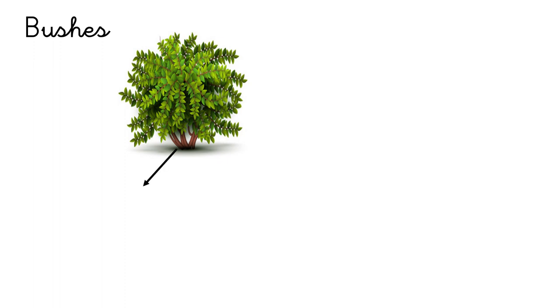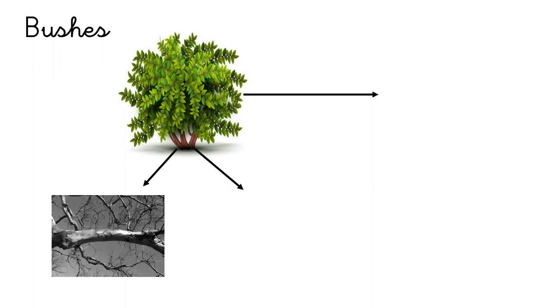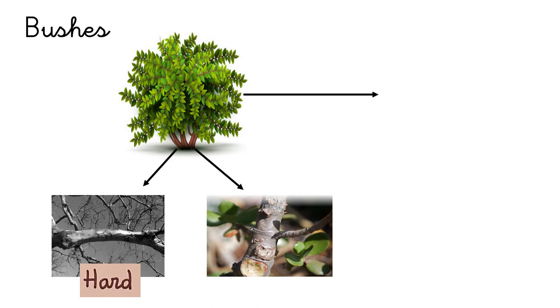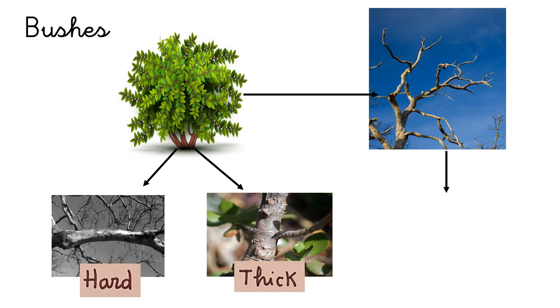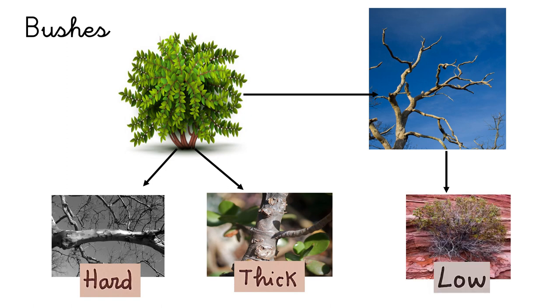Now, we are going to continue with bushes. Bushes have got a stem and branches. Their stem is hard and thick, and their branches are low branches. It means that the branches are very near, very close to the floor, to the ground.